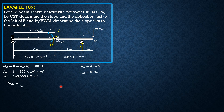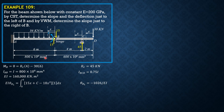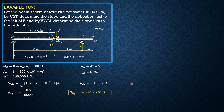So EI times theta_B just to the left equals the integral from 0 to 6 of 15x plus couple C, minus 36x times x over 2 (or minus 18x squared). The derivative of this moment equation with respect to C is 1 dx. Prior to integration, take note that C is just invented so it's not part of the integral. Evaluating this integral, theta_B left equals negative 1026 over EI. Since EI is 160,000, theta_B left equals negative 1026 over 160,000, which is negative 6.4125 times 10 to the negative 3 radians.